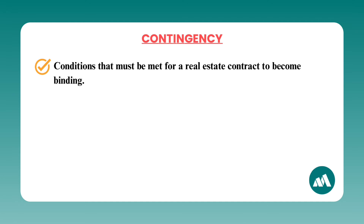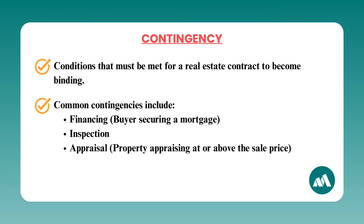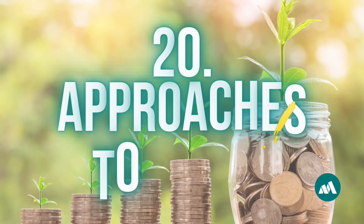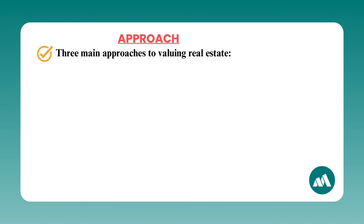Number nineteen: contingency. Contingencies are conditions that must be met for a real estate contract to become binding. Common contingencies include financing — such as the buyer securing a mortgage — an inspection, and an appraisal where the property must appraise at or above the sales price. If a contingency isn't met, the buyer can typically withdraw from the contract without penalty. Knowing how to structure contingencies protects both buyers and sellers during the transaction process.